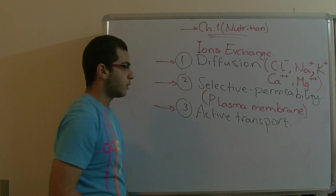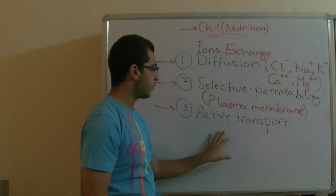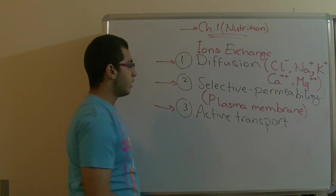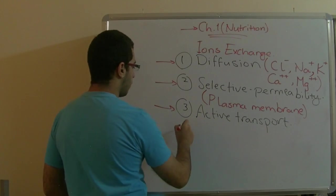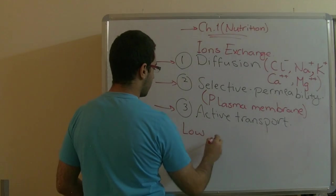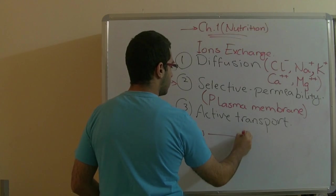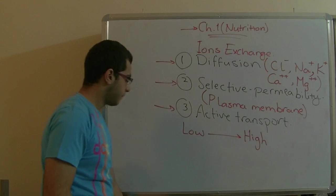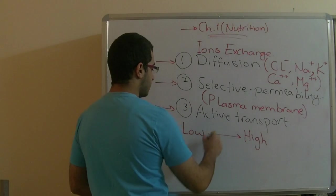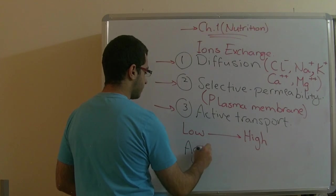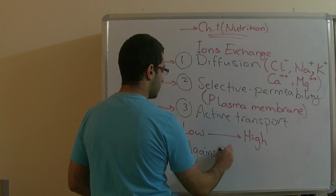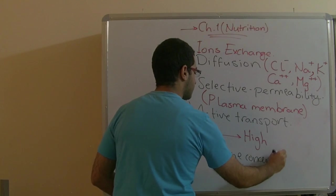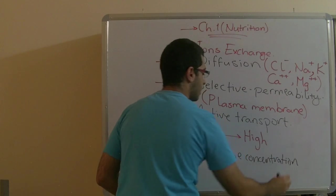The last and most important method is active transport. Active transport can be considered the opposite of diffusion, because ions move from a low concentration medium to a high concentration medium — in other words, they move against the concentration gradient.